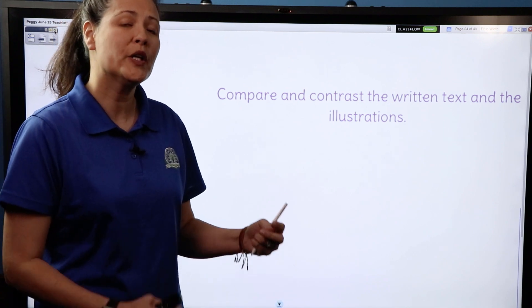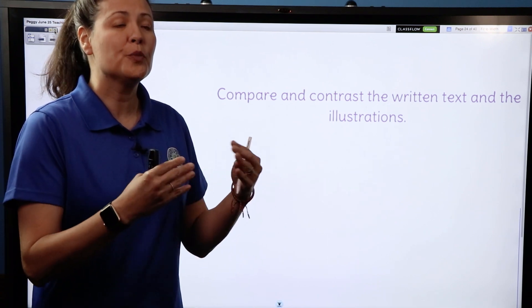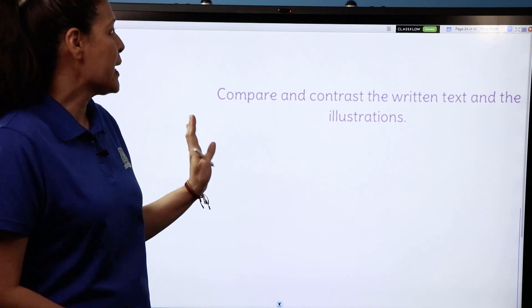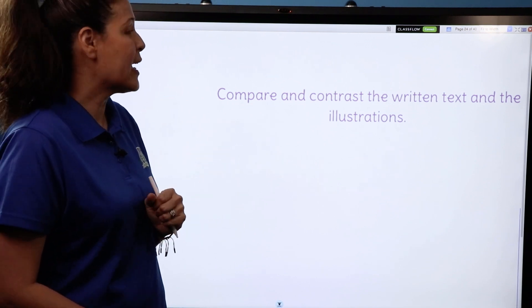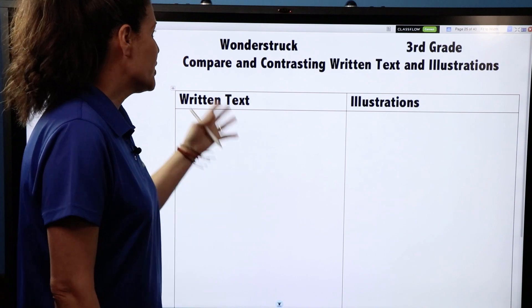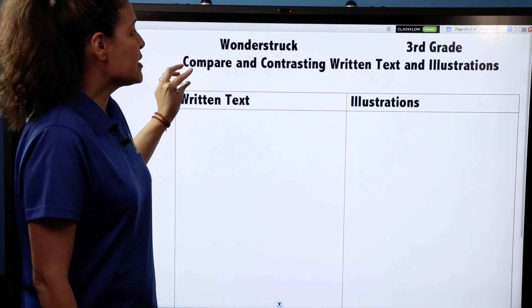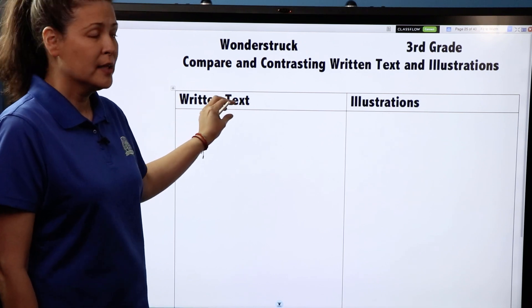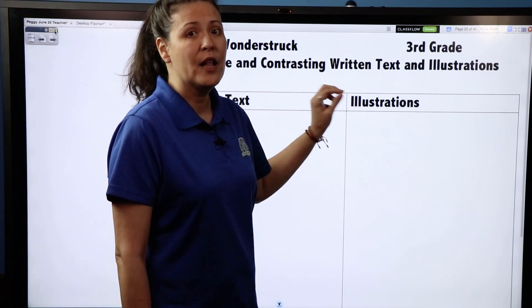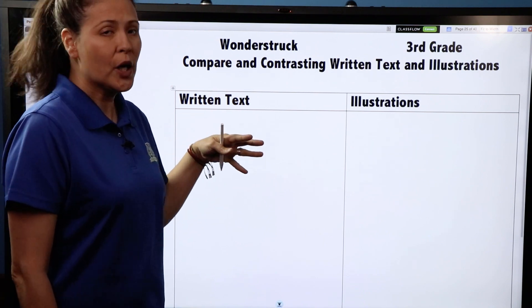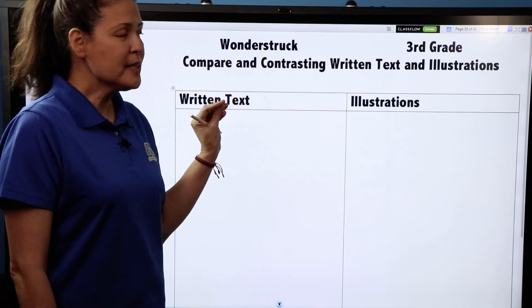Okay, so now we're going to work together to begin completing the t-chart that's attached below to compare and contrast the written text and the illustrations. Your t-chart looks like this, and you'll notice that it is split between the written text and the illustrations that are in Wonderstruck.